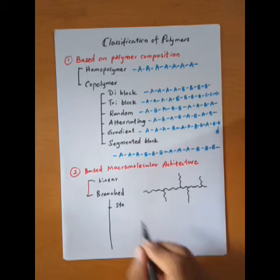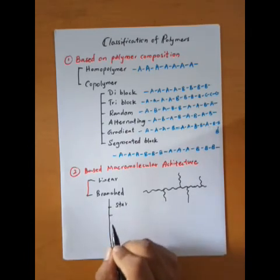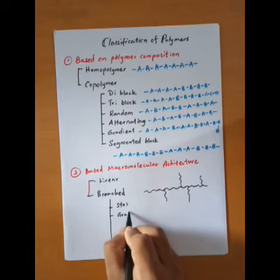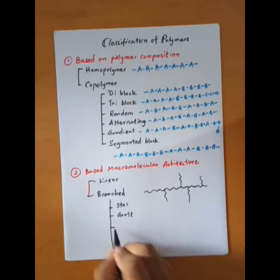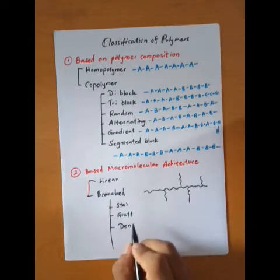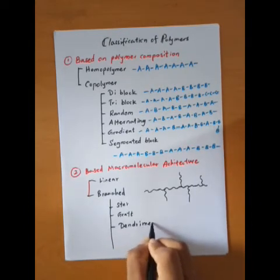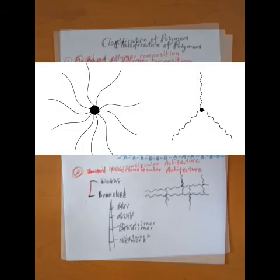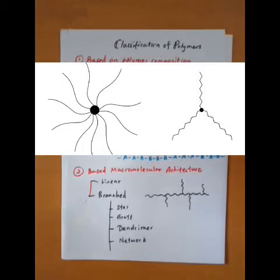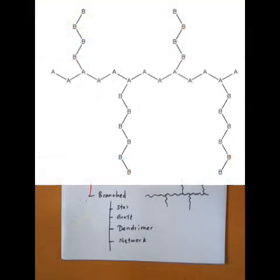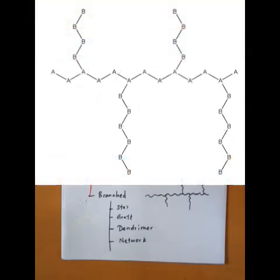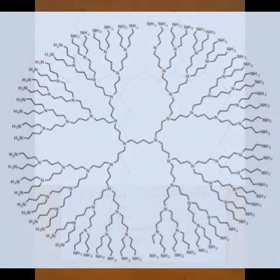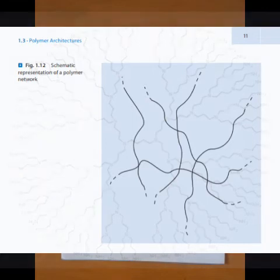Branched polymers can be further divided into star, graft, dendrimer, and network types. In a star polymer, at least three linear chains are connected to a central core molecule. Graft polymers have side chains grafted onto the backbone. Dendrimer and network polymers are also sub-types of branched polymers.